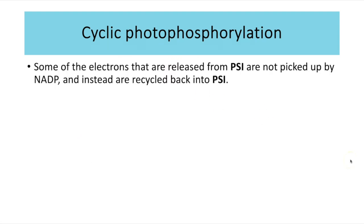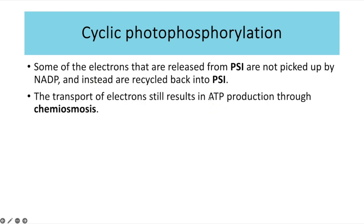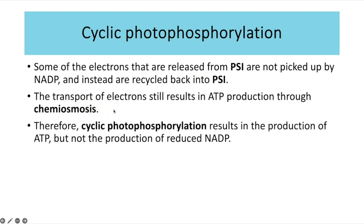Cyclic photophosphorylation happens simultaneously. As light energy is absorbed by photosystem 1, electrons are excited, raised in energy level and released. They pass along the electron transport chain — some are picked up by NADP to become reduced NADP, but some are recycled back into photosystem 1. That transport of electrons still results in ATP production through chemiosmosis. Therefore, cyclic photophosphorylation results in the production of ATP but not reduced NADP, because the cycling back into photosystem 1 bypasses the step where NADP picks up electrons. Non-cyclic photophosphorylation, by contrast, results in both ATP and reduced NADP production.